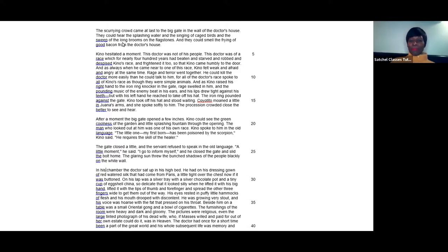In his chamber, the doctor sat up in his high bed. He had on his dressing gown of red watered silk that had come from Paris, a little tight around the chest now as it was buttoned. On his lap was a silver tray with a silver chocolate pot and a tiny cup of eggshell china, so delicate that it looked silly as he held it, lifted with the tips of his thumb and forefinger spread out with the other three fingers wide to get them out of the way. His eyes rested in puffy little hammocks of flesh, and his mouth drooped with discontent. He was growing very stout, and his voice was hoarse with the fat that pressed on his throat.